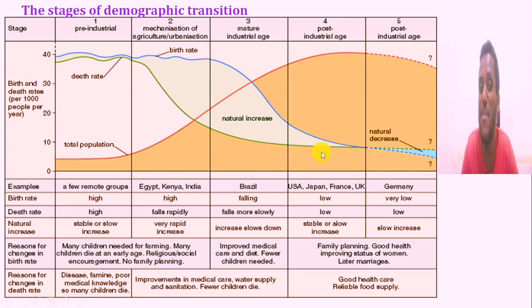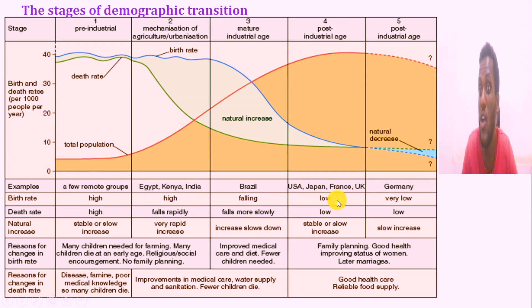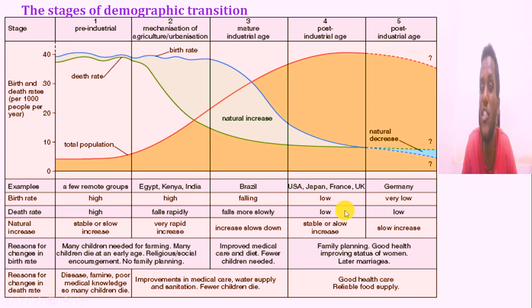In post-industrialization countries — like the US, Japan, France, and the UK — the birth rate is almost low and mortality is low as well, so the population becomes almost stable or naturally stable again.